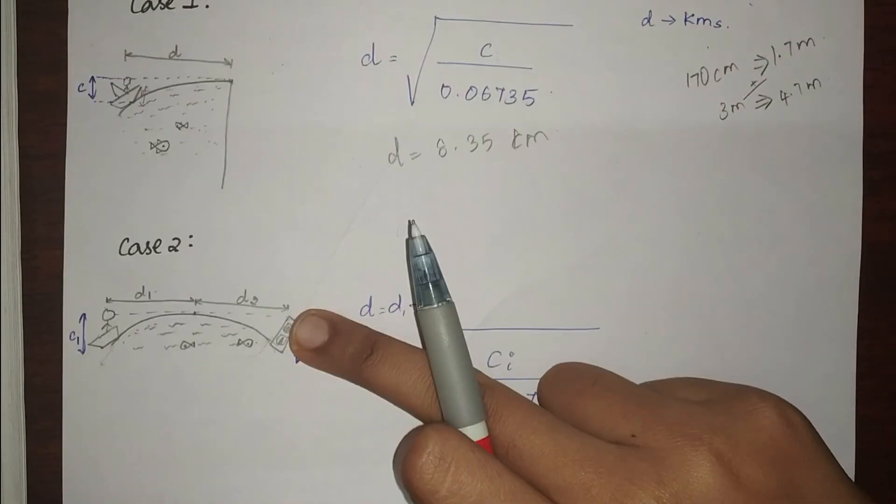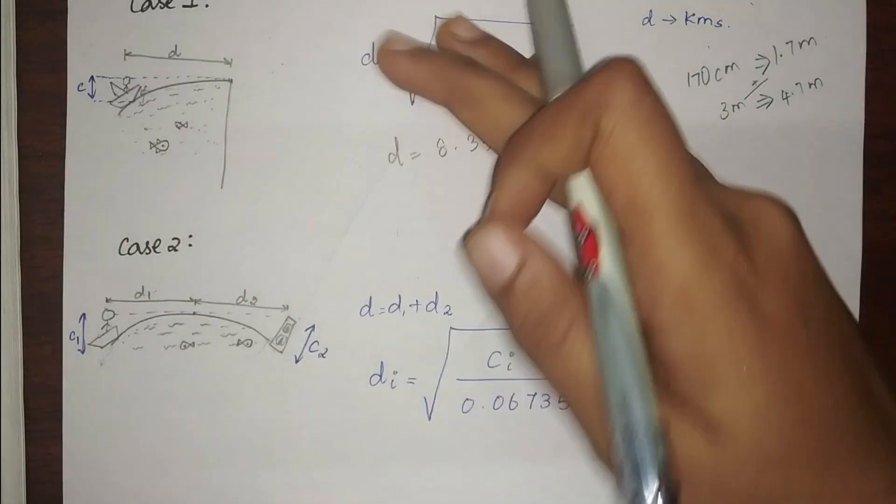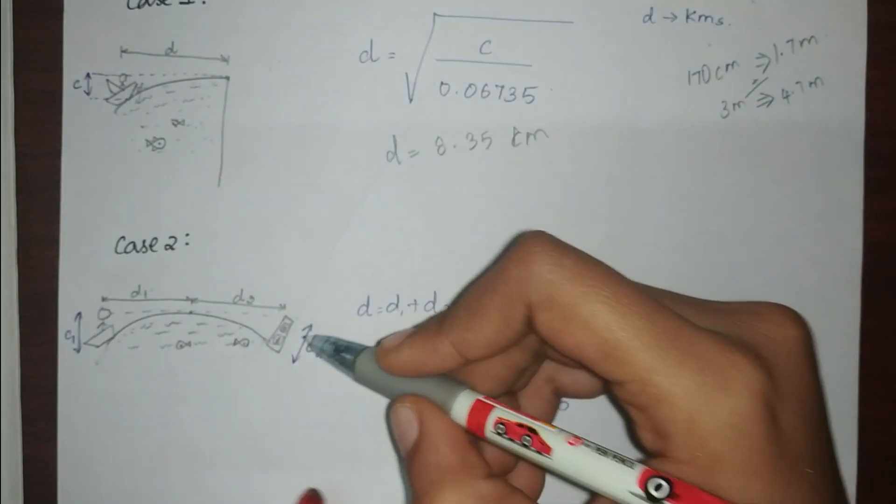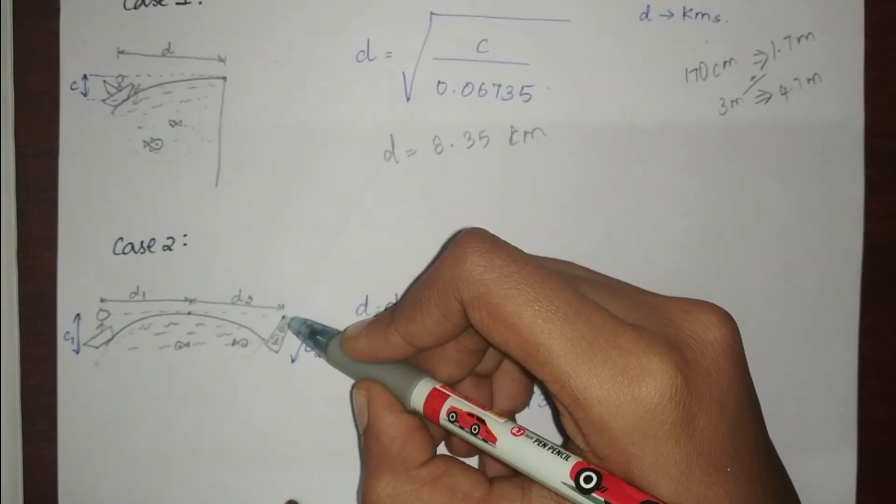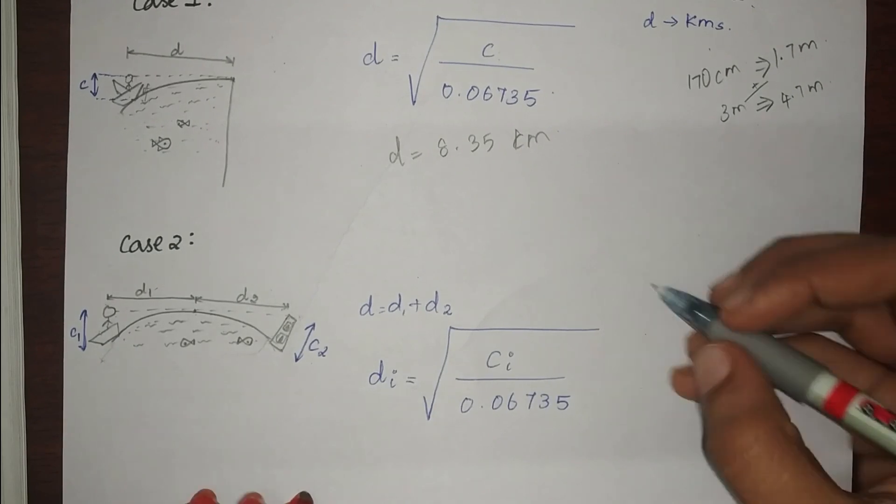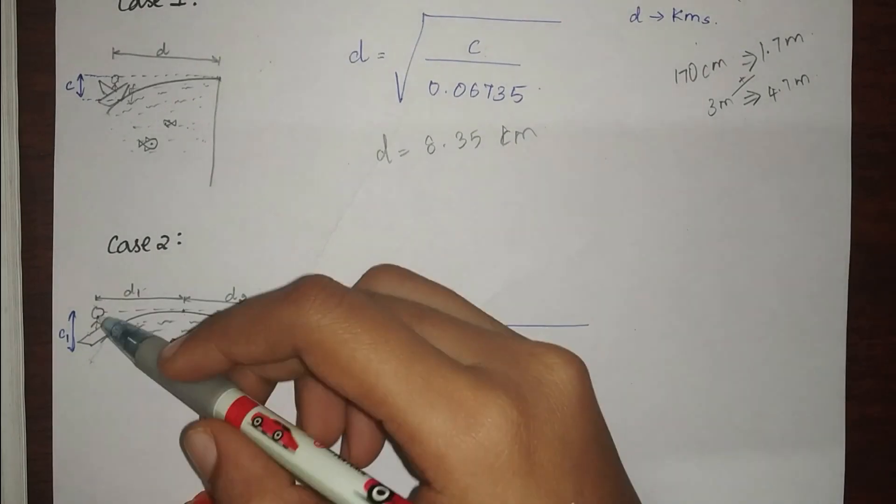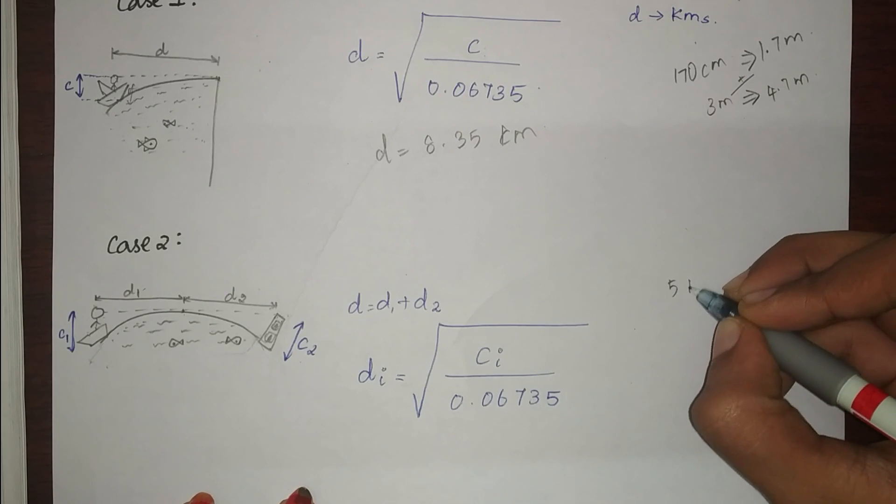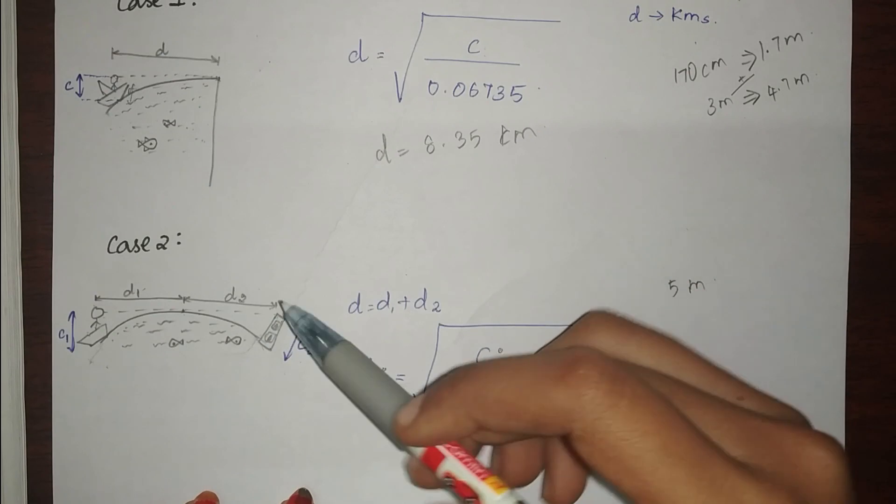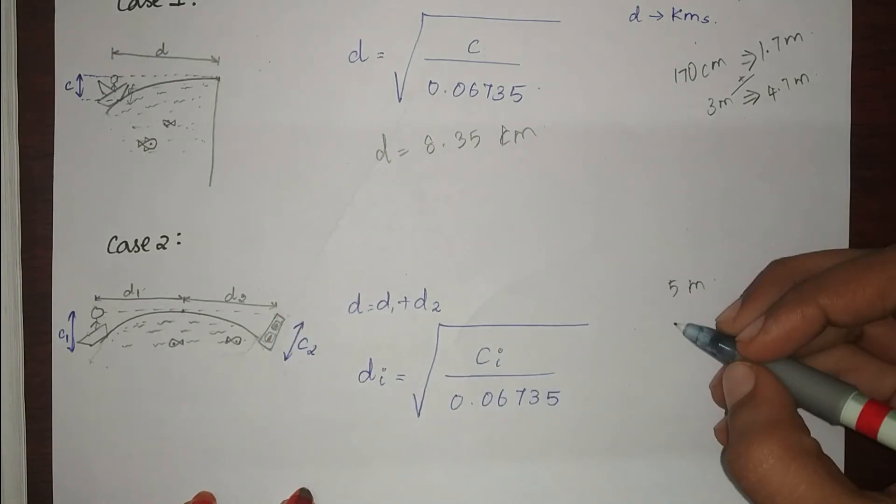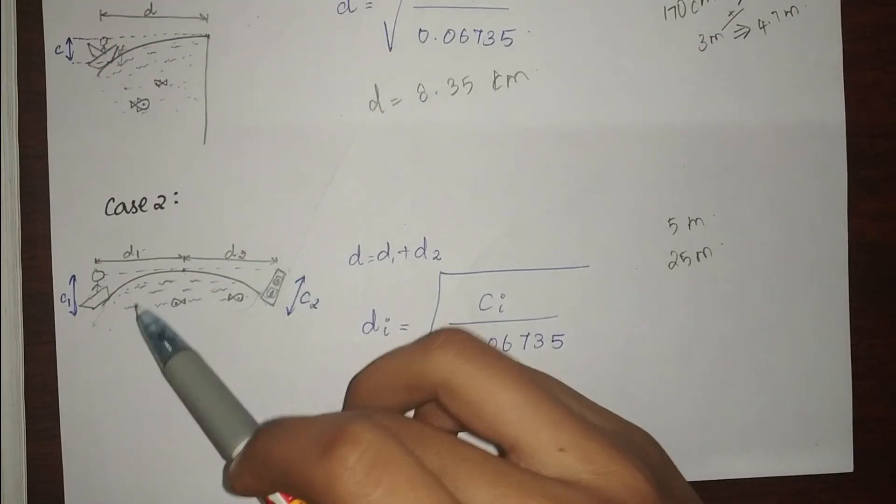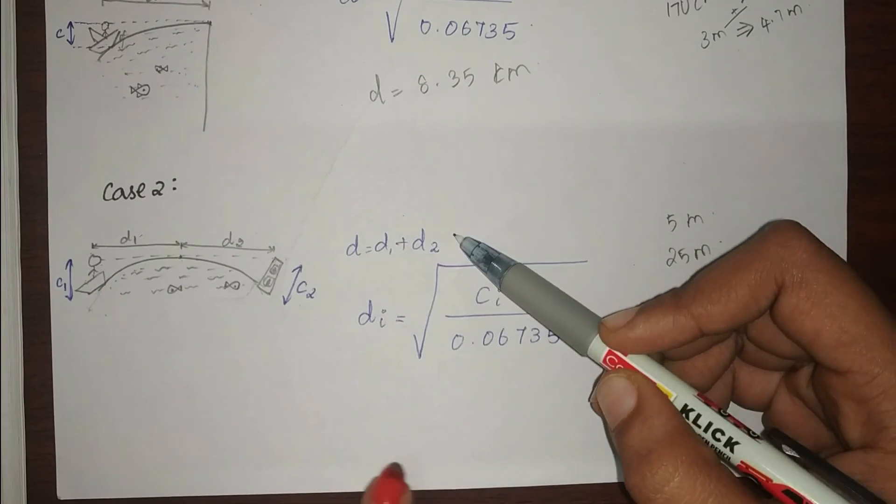And the next one is case 2. Say all you are seeing is just the horizon. All you are seeing is just the horizon. And now you start to see the top of the lighthouse. You have just started to see the top of the lighthouse. And now you know your height. Say your height, the height from the deck of the ship is 5 meters. And you have googled and found out the height of this lighthouse. Say this lighthouse is around 25 meters.